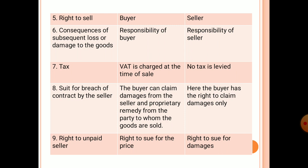Eighth is the suitable breach of contract by the seller: in sale, the buyer can claim damages from the seller and a proprietary remedy from the party to whom the goods are sold; in agreement to sell, the buyer has the right to claim damages only. The last difference is the right of unpaid seller: in sale, the right to sue for the price; in agreement to sell, the right to sue for damages.